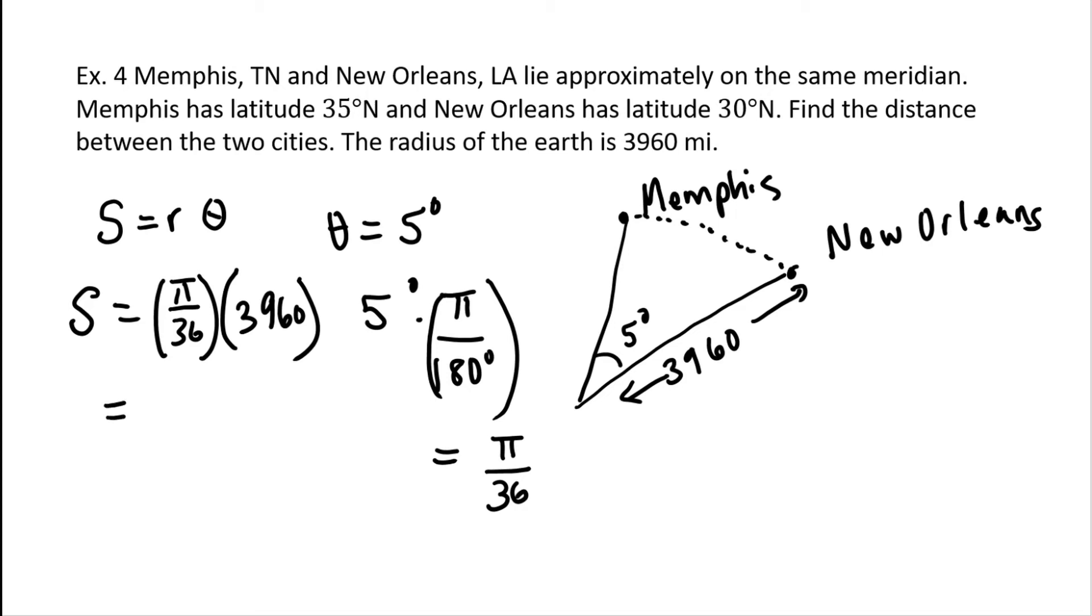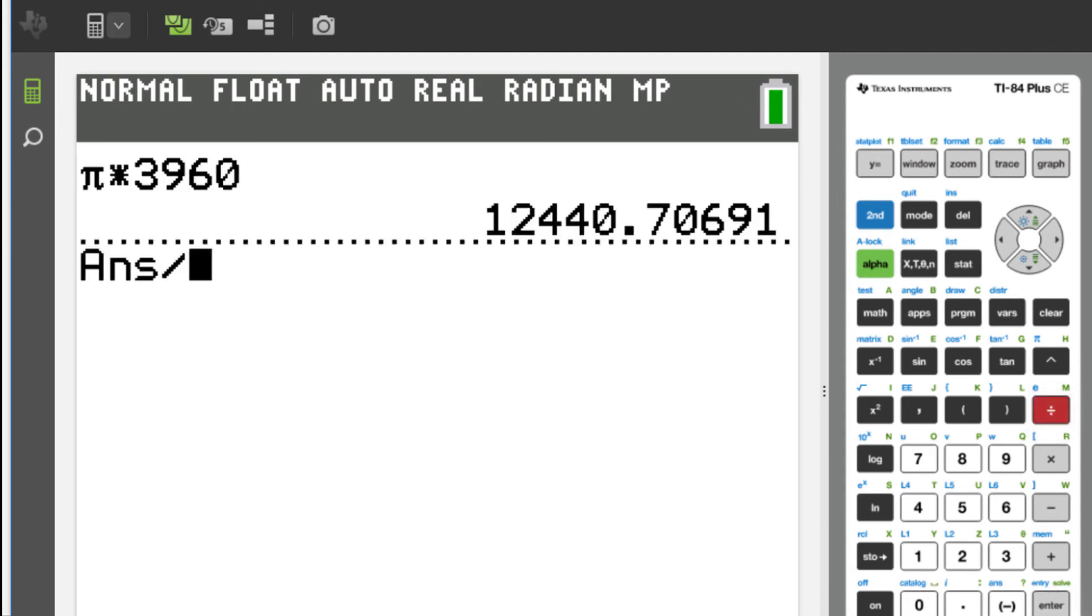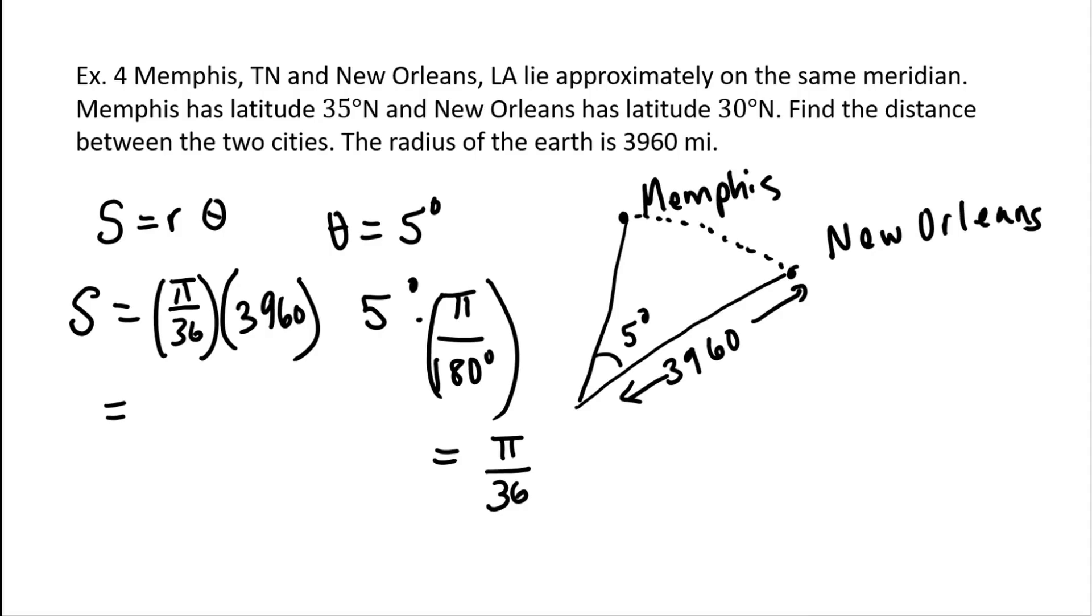Now we'll get s is equal to π/36 times the radius of 3,960. Let's use our calculator to compute that value. So let's begin. Find the π. We've got π. Let's do times. The radius of the earth is 3,960 miles. And so I'll enter that, and then I'll divide that by 36, and I get, we get 345.56 miles. The exact distance is π/36 times 3,960, and when it was computed it was approximately 345 miles.